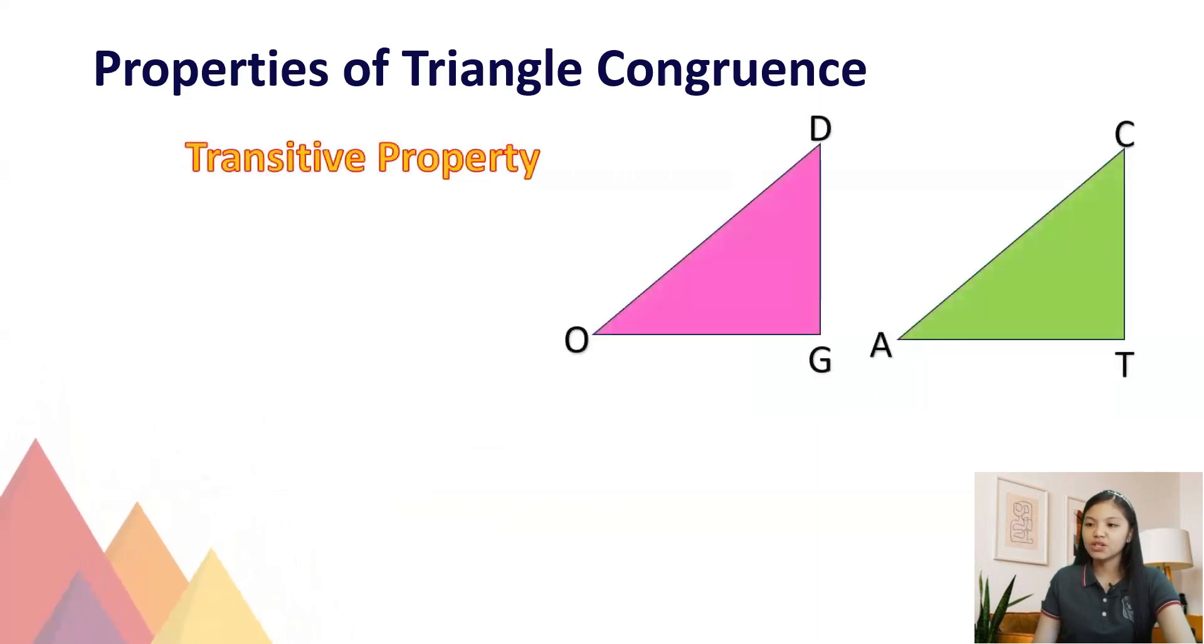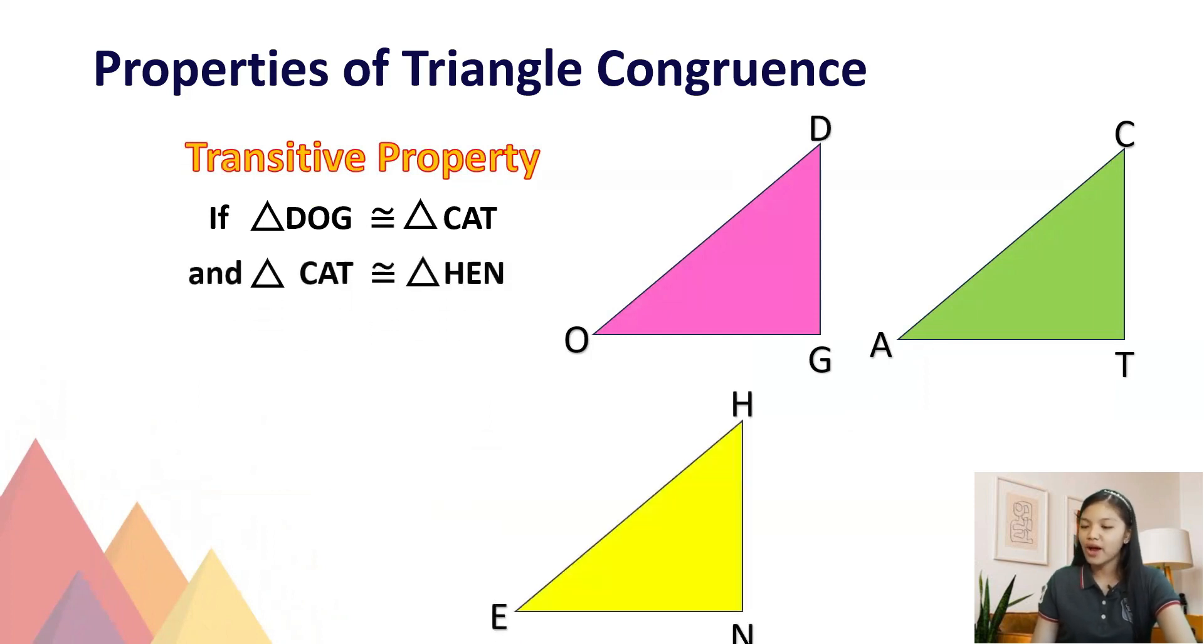Last is the transitive property. If triangle dog is congruent to triangle cat, and triangle cat is congruent to triangle hen, then triangle dog is congruent to triangle hen. In other words, if the first triangle dog is congruent to the second triangle cat, and the second triangle cat is congruent to the third triangle hen, then the first triangle dog is congruent to the third triangle hen.